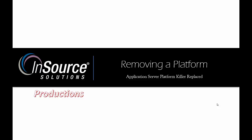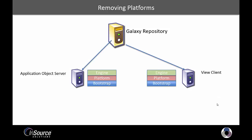The application server platform killer has been replaced. As a quick review, the Galaxy objects in the repository are typically deployed to remote nodes that might be application object servers and view clients. These objects are deployed on top of a bootstrap and would include a platform and an engine and so forth. Sometimes a platform and engine may get into a state where you simply want to start over and remove those objects.